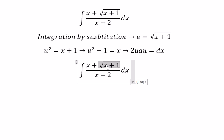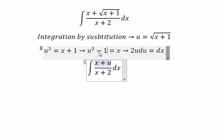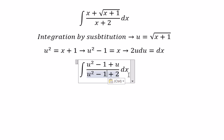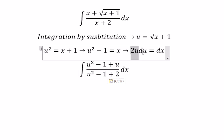This one we change for u. x we change for u squared minus 1. x in here too. dx we change for 2u du.